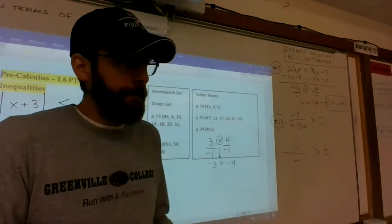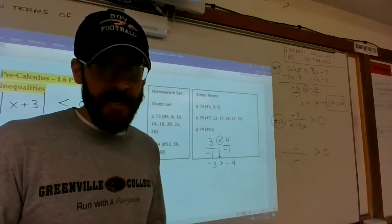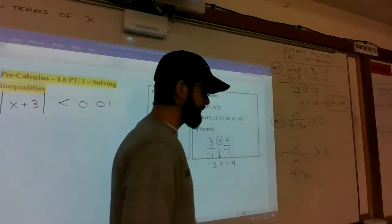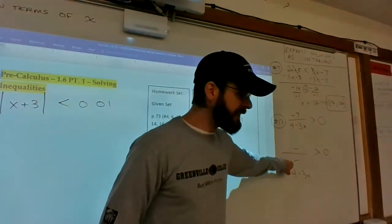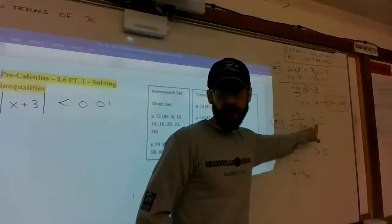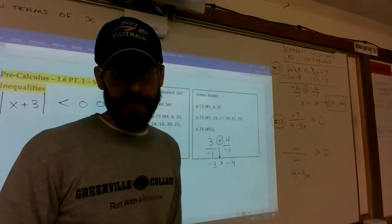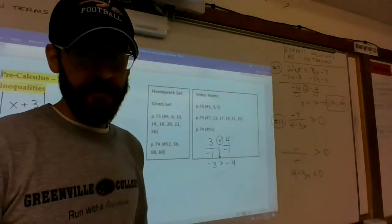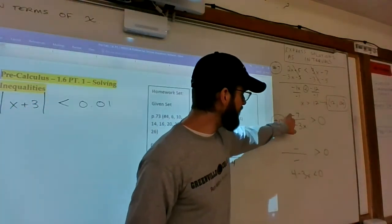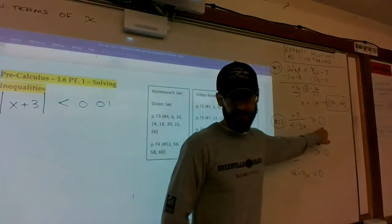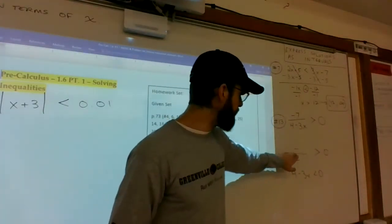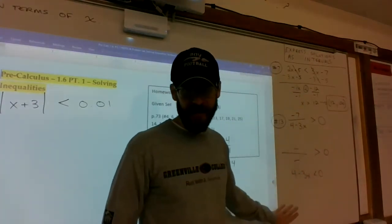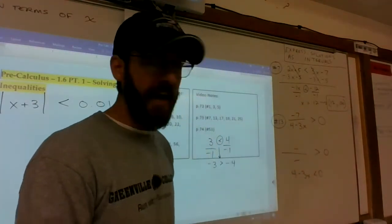Therefore, the bottom can't be positive, it has to be negative. The bottom, 4 minus 3x, the denominator, must be negative in order to make this a true statement. So you're essentially solving that inequality where only a negative divided by a negative will make a positive. The bottom must be negative. So I said 4 minus 3x is less than zero, and then you solve it.